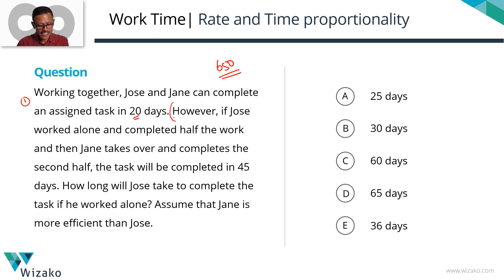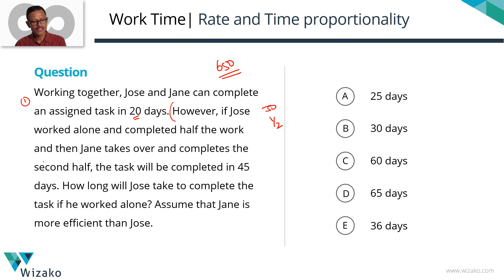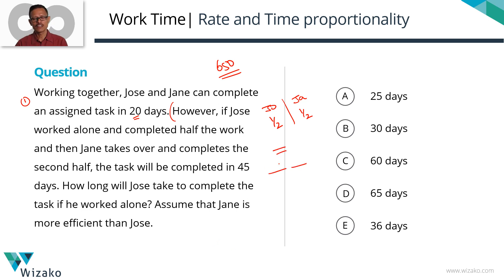From the second statement, it becomes a little interesting. If Joe worked alone and completed half the work, then Jane takes over and completes the second half — they are working in series. The first person finishes half and the second person takes over. In that case, they'll take 45 days to complete the task. How long will Joe alone take to complete the task? Assume that Jane is more efficient than Joe.